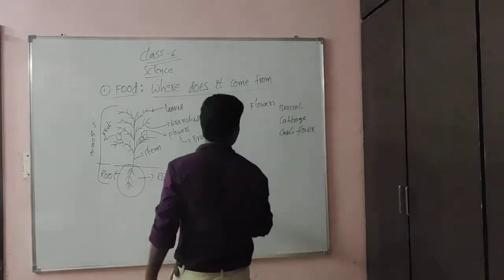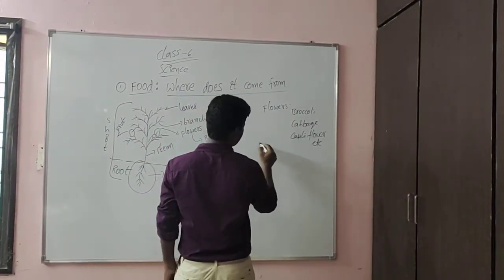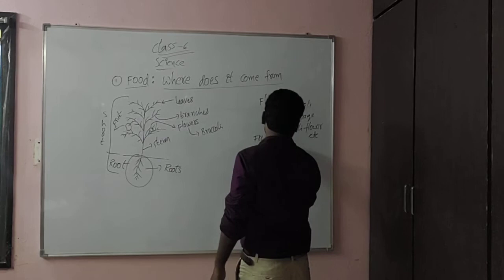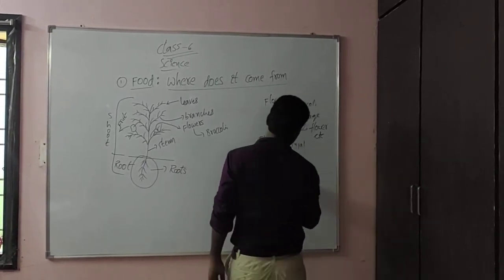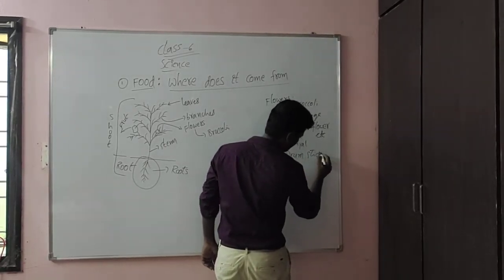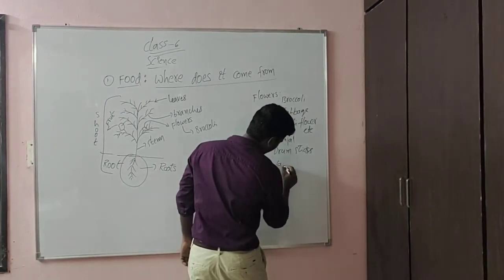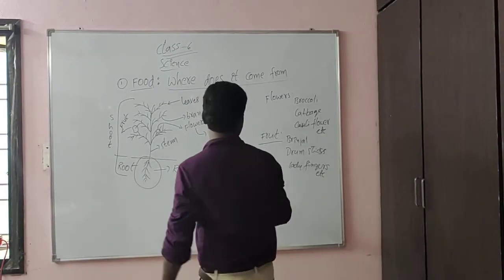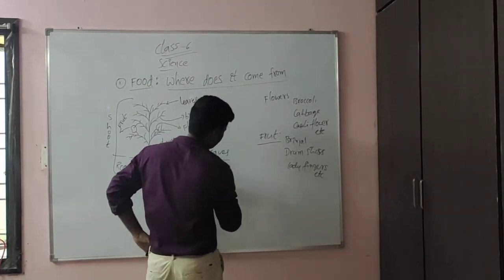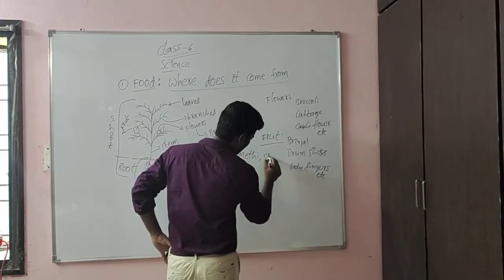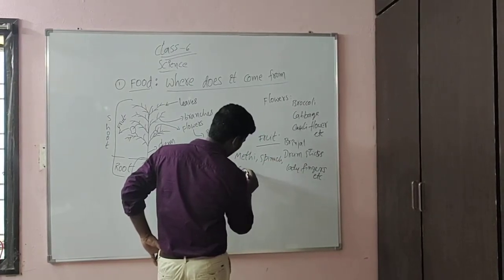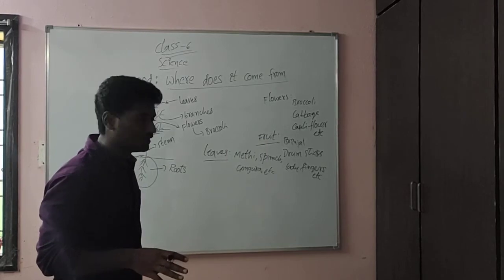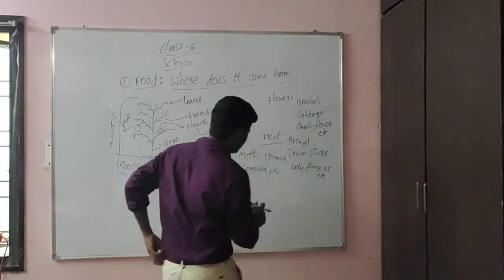Now let us go with the fruit part. All of us know about this — like brinjal, drumsticks, lady fingers, etc. And for leaves — methi, spinach, gongura, etc. All these leaf vegetables that we eat in daily lives, including dal, are all leaves.